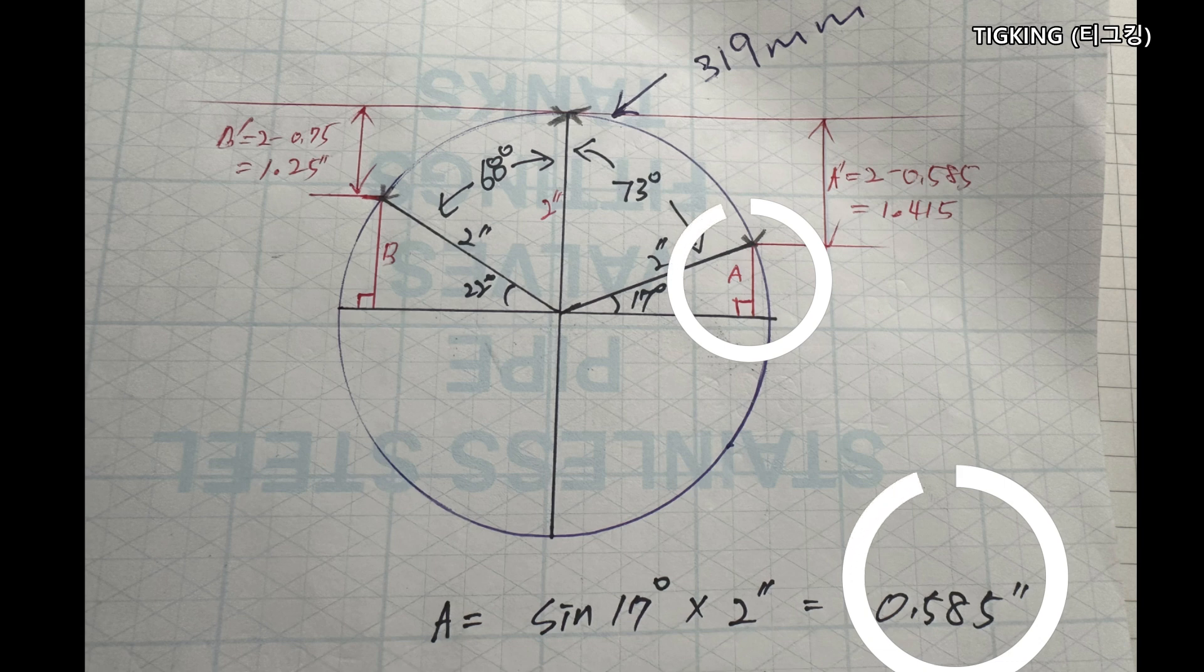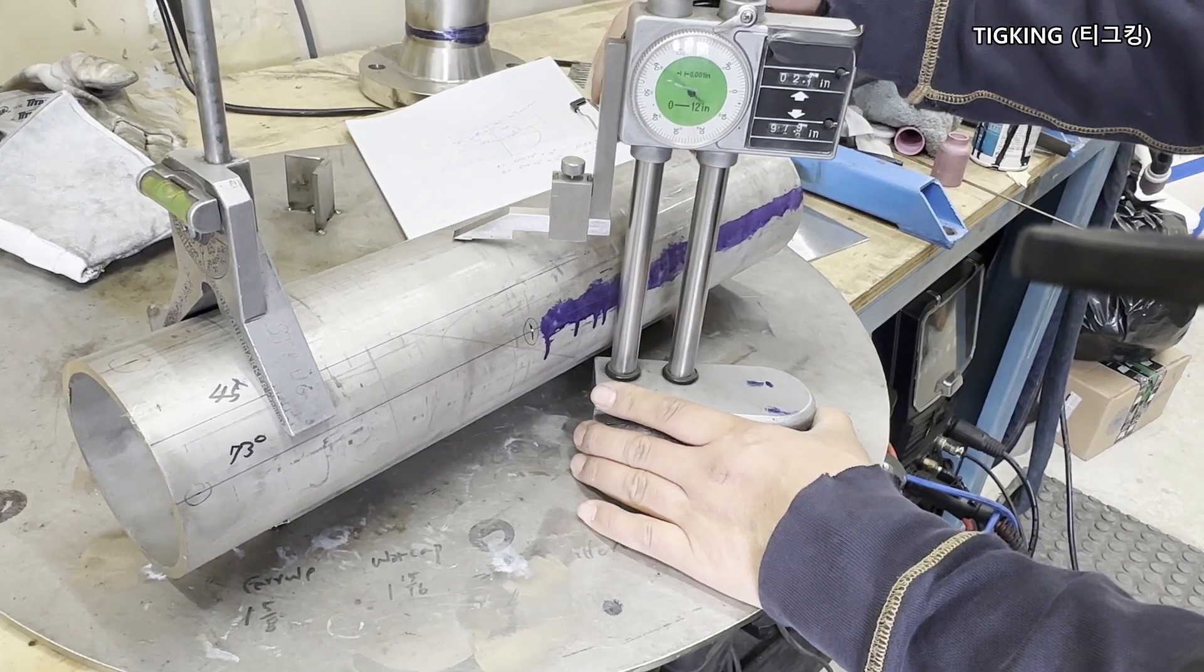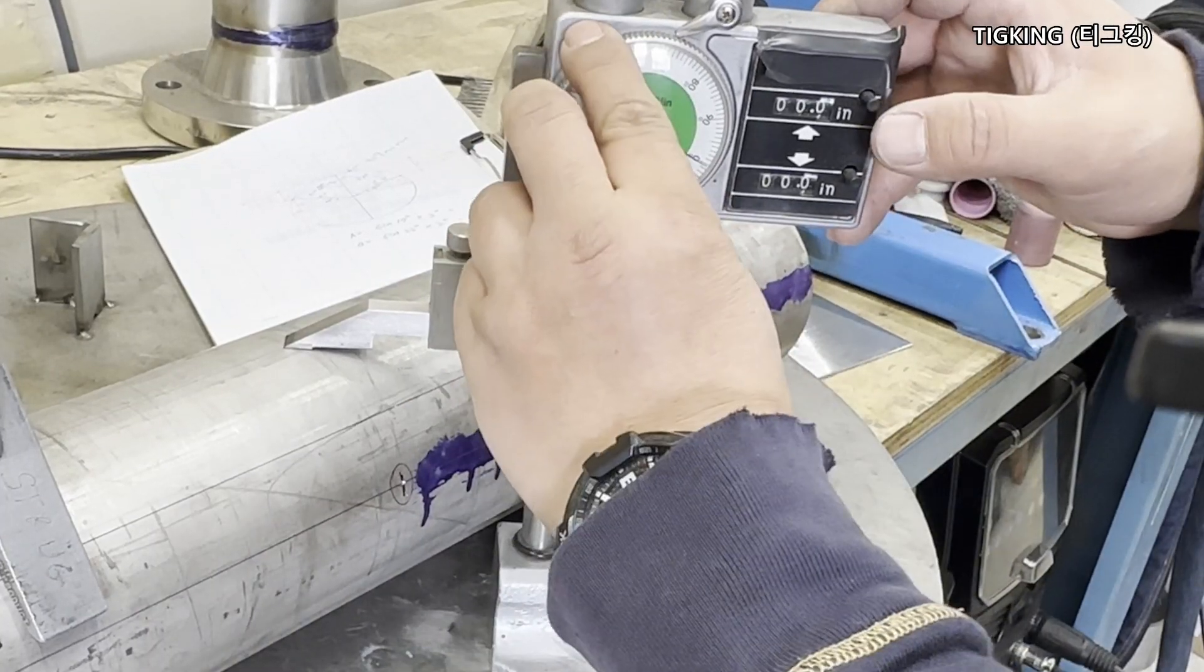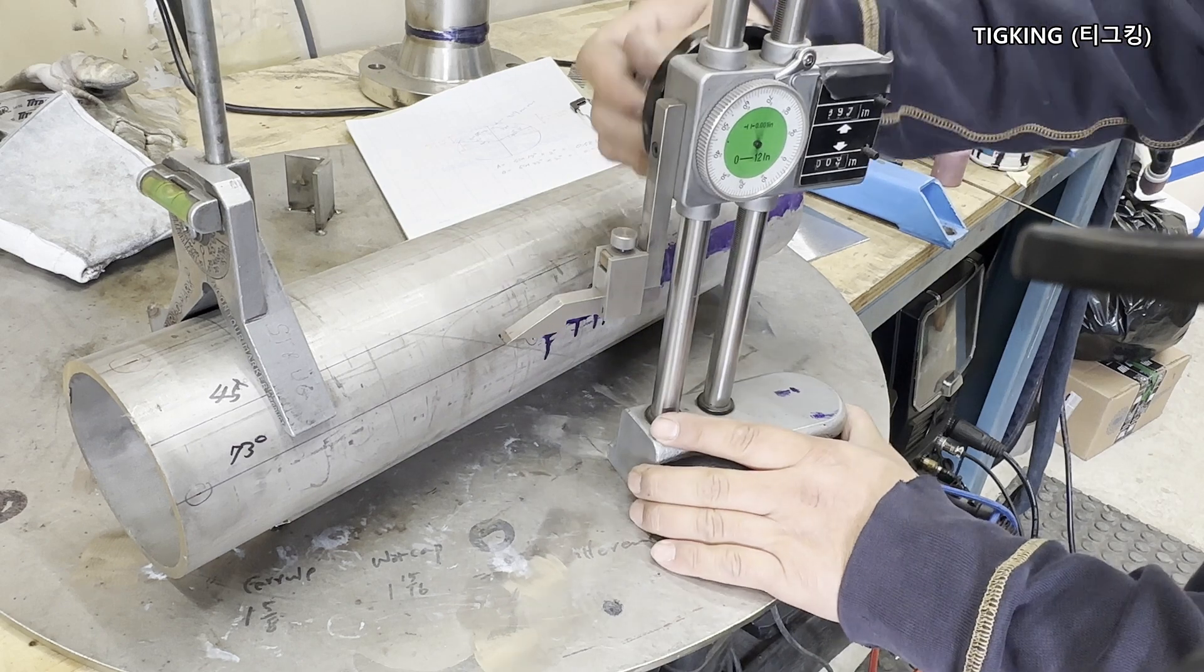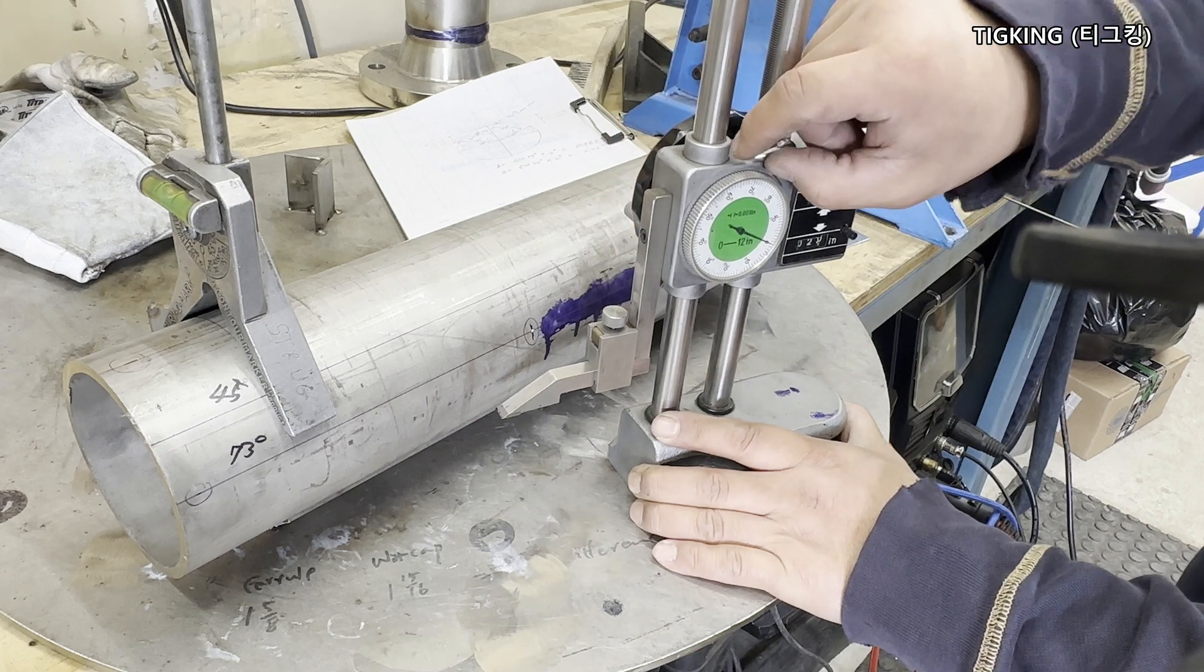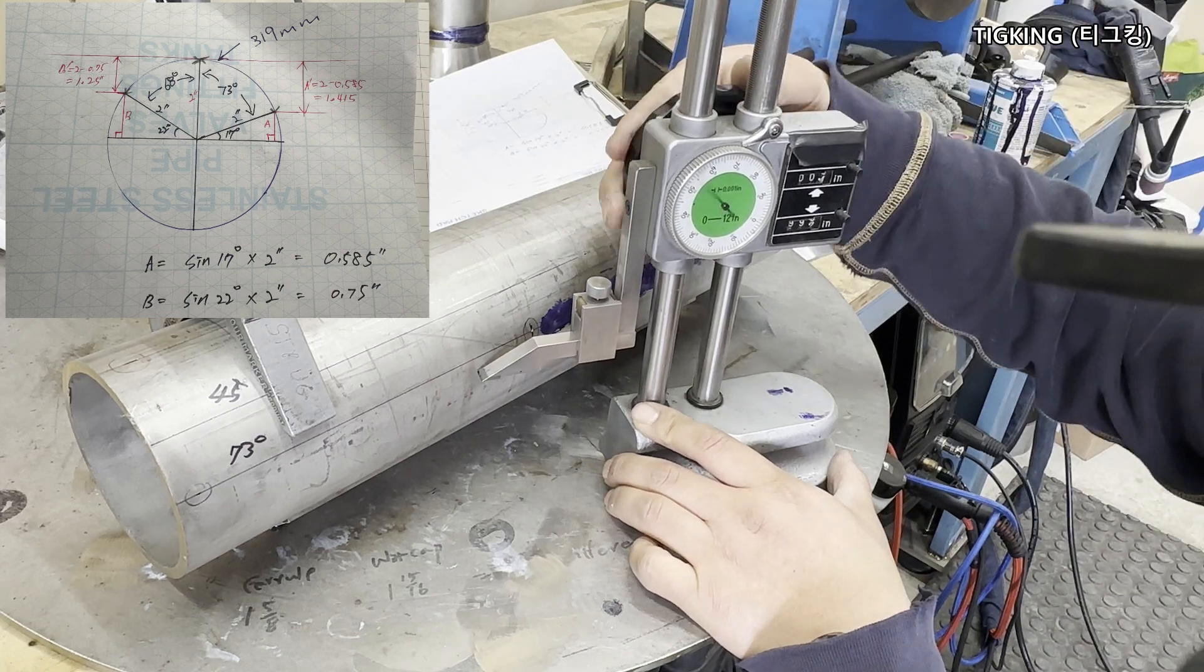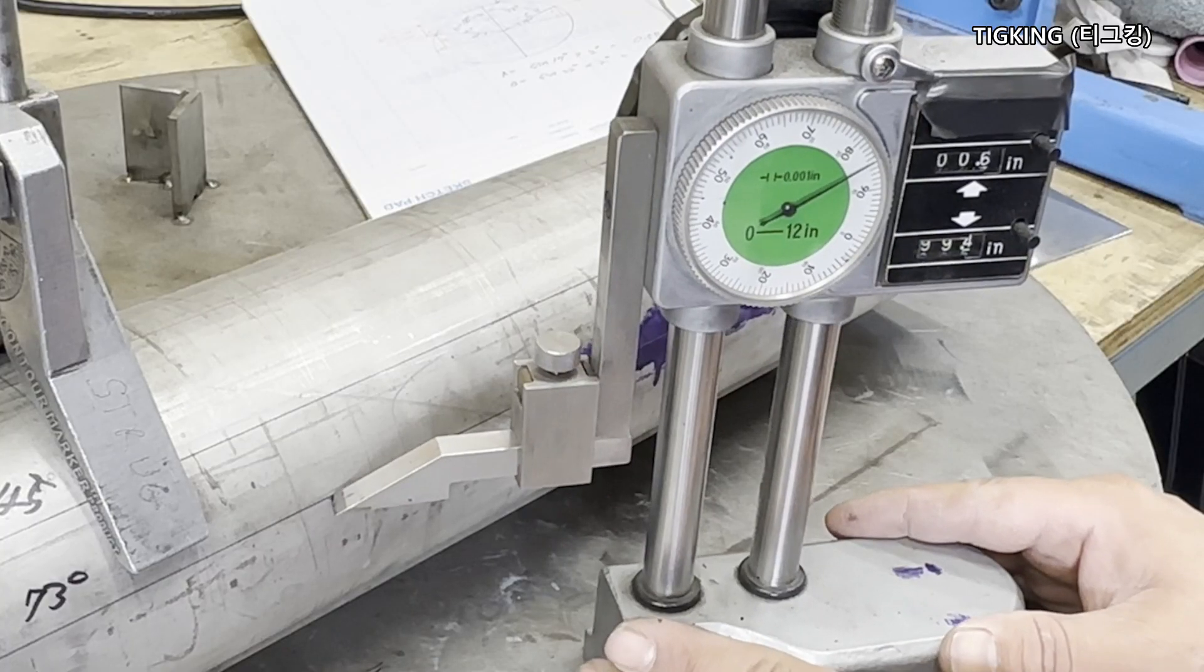Let's mark the right angle height A. Its height is 0.585 from the pipe center. Get your gauge touching the top of the pipe and set everything zero. The pipe OD is 4 inches and the half is 2 inches. So, I will lower the gauge 2 inches down and set everything zero again. Raise the gauge to 0.585. How is it? It is bang on.